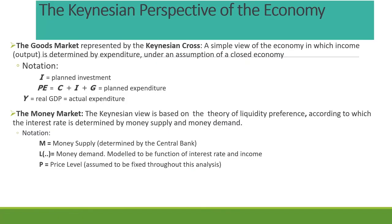The IS-LM model draws from a Keynesian perspective of the economy. From that perspective, we represent the goods market essentially as a closed economy in which output and therefore income is determined by expenditure. It is a purely Keynesian perspective, and it is represented on what's known as the Keynesian cross.